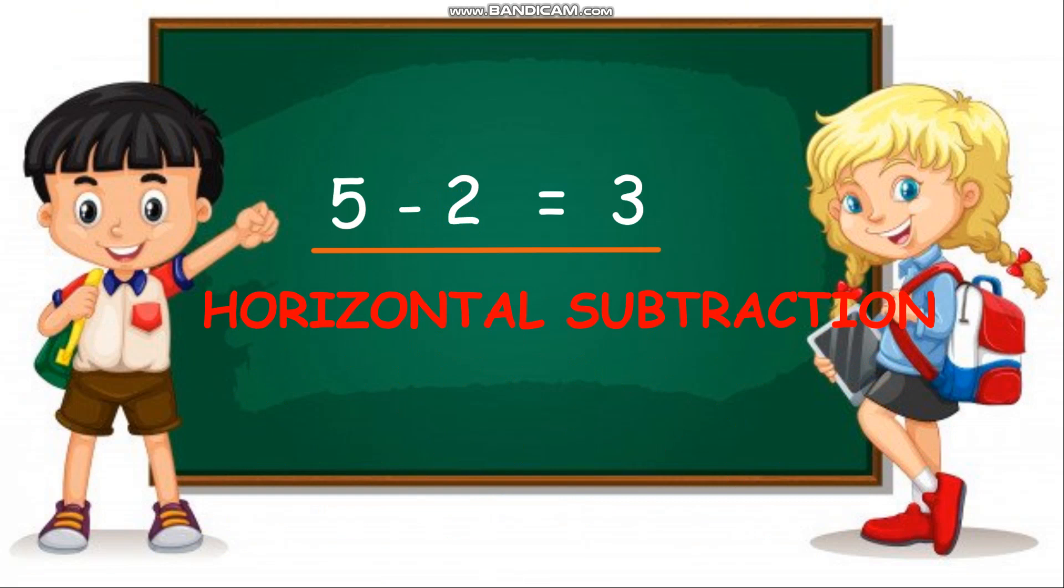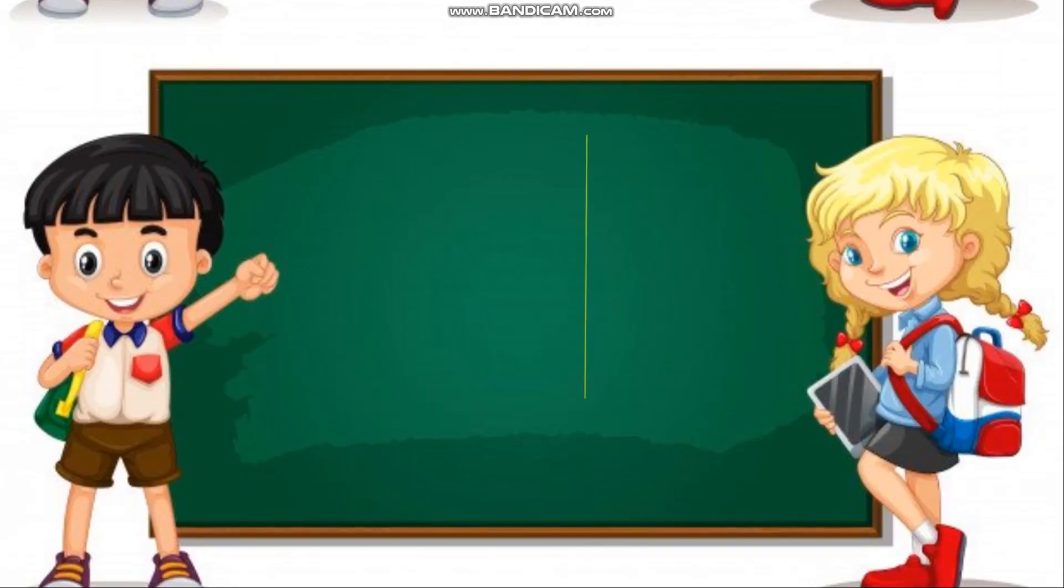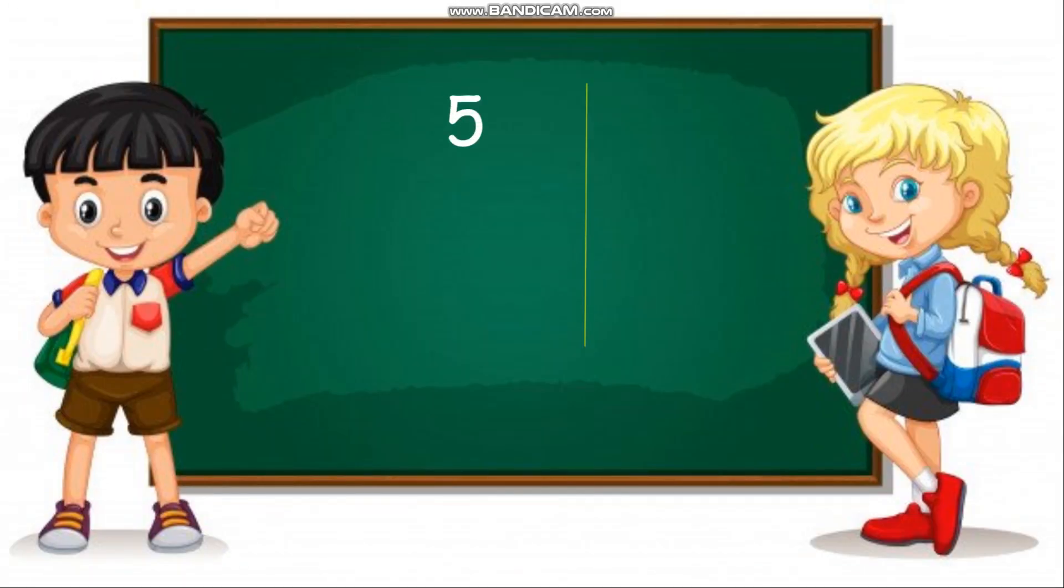But if I write the same problem in this way, 5 minus 2 and then I form a line, equals 3, this is in the pattern of a standing line. So it is called as vertical subtraction. Can you see here? It is in the form of a standing line. That is why it is called as vertical subtraction.